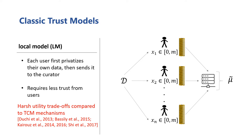The local model is on the opposite end of the trust spectrum. Here, each user first privatizes their own data, denoted by the privacy barrier now directly on each user. Then they send off this privatized data to the curator. At this point, the curator can perform any computations at once on the data, since the differential privacy has already been ensured. This is great, because it requires essentially no trust from the users.